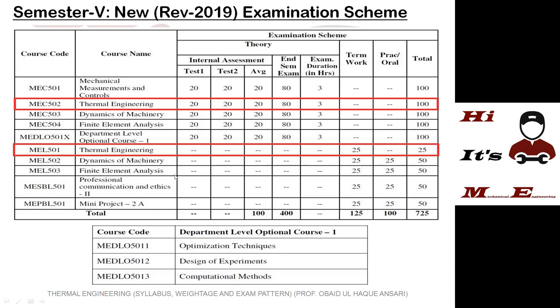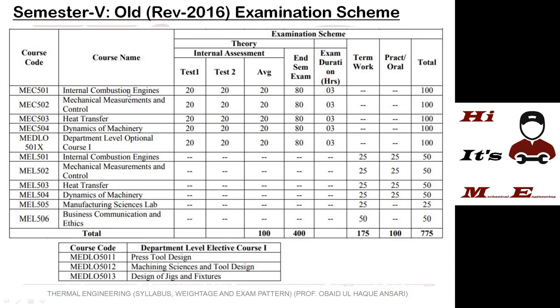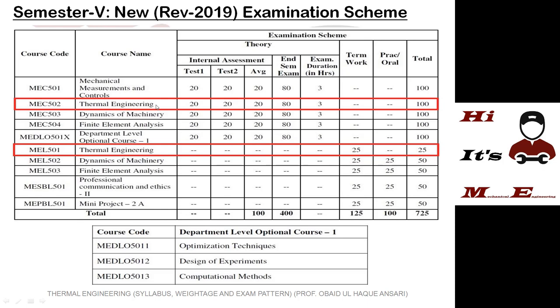In the new scheme the compulsory subjects are mechanical measurement and control and dynamics of machinery. The other two compulsory subjects from the old scheme — internal combustion engines and heat transfer — have been combined in the new syllabus and given a new name: thermal engineering. So thermal engineering is actually a combination of two subjects, that is heat transfer and internal combustion engines.